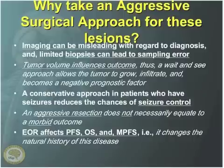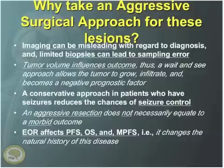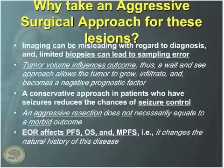Larger tumors don't do as well because they're biologically different. The question that comes to mind for us as surgeons is: can we do anything to influence the natural history of the disease by taking a large tumor and making it smaller? If we can, then a conservative wait-and-see approach is really not the best strategy for that asymptomatic patient. A conservative approach in patients who have seizures really reduces the chances of seizure control because of what we know as the kindling phenomenon, which promotes more seizures.